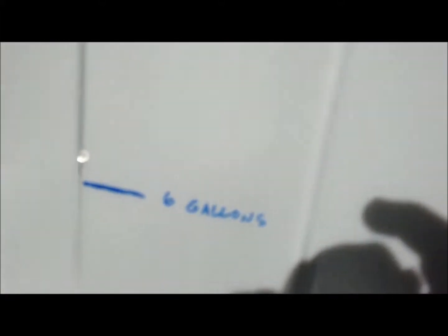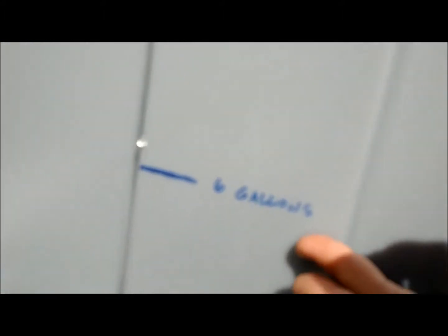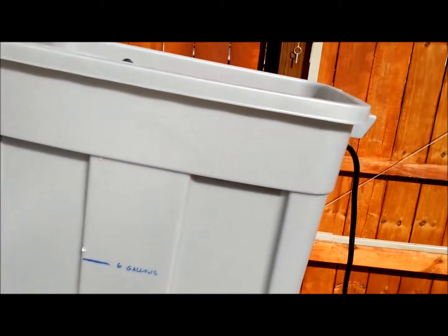I've also on the side made a little annotation as to where I should fill it. Once it's full, this is partially translucent so I can see where the water is filling to. Six gallons gives me an idea of how much nutrient it needs.